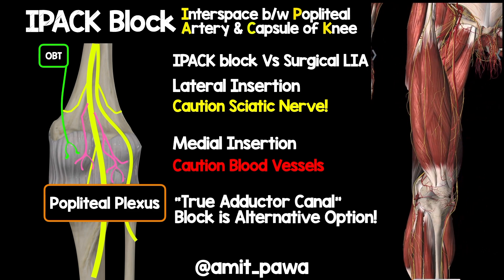Another alternative is to perform a true adductor canal block. The rationale is that the superficial femoral vessels dive through the adductor hiatus to the posterior aspect of the knee. If you deposit local anaesthetic at the point where the superficial femoral vessels are about to dive down the back of the knee, the local anaesthetic will follow those vessels down and take out the popliteal plexus. This is another option available to you.